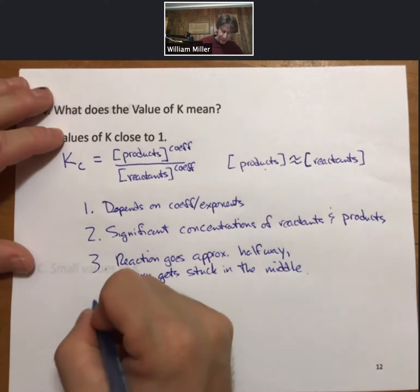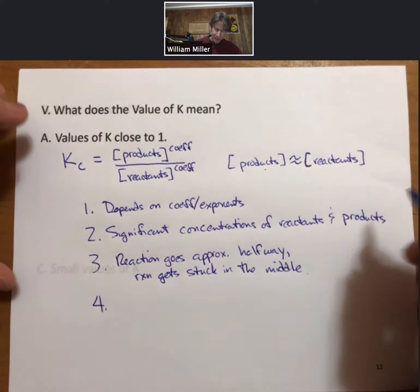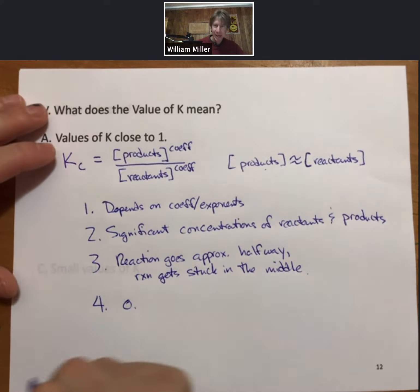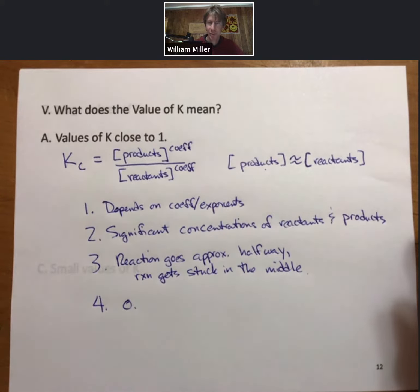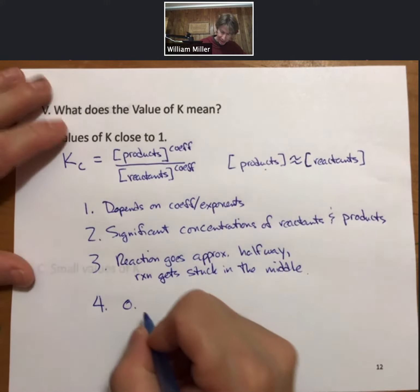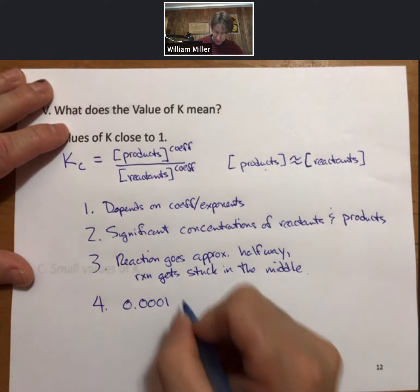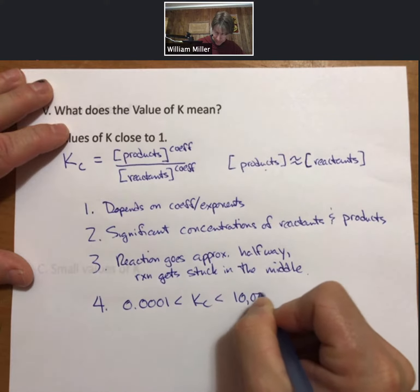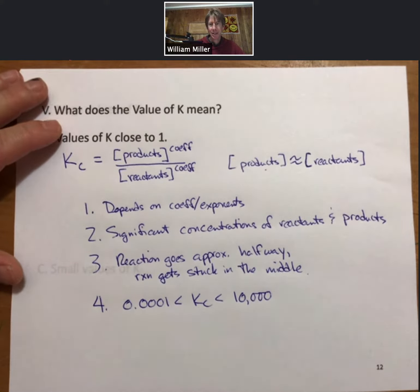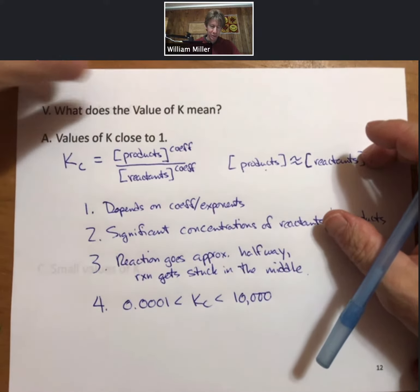Because we have a broad idea of what's happening when this is true, if KC or KP or whatever other K values we see are between one ten thousandth and ten thousand, those are values of K close to one.